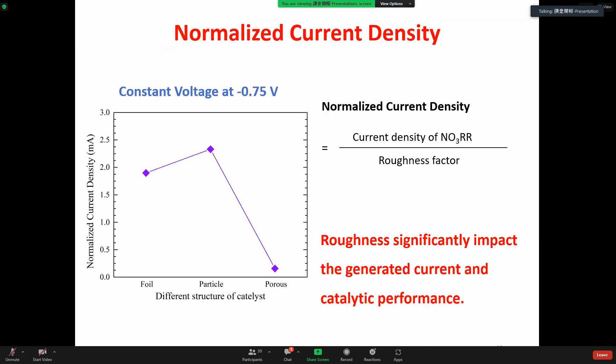Then we normalized the current density of the nitrate reduction reaction by calculating the roughness factor. From the figure shown on the left, we can find the normalized current density dropped dramatically. This result shows that the porous structure is a dominant factor, which controls the nitrate reduction performance and ammonium production.